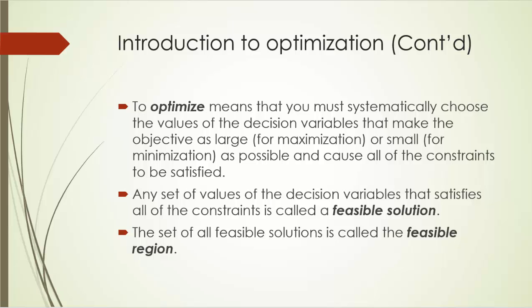Any set of values of the decision variables that satisfies all the constraints is called a feasible solution. And the set of all feasible solutions is called the feasible region. We'll demonstrate feasible solution and feasible region when we discuss the graphical approach to solving linear programming models.